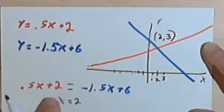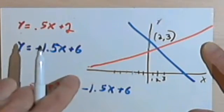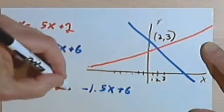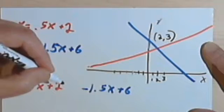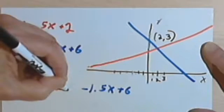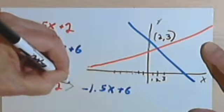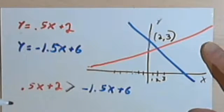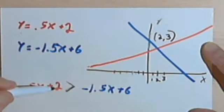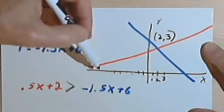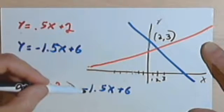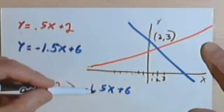Okay, the next step. So let's say that instead of having an equal sign, we had a greater than sign. Okay, so we've got .5x plus 2—remember that's the red line—is greater than negative 1.5x plus 6.